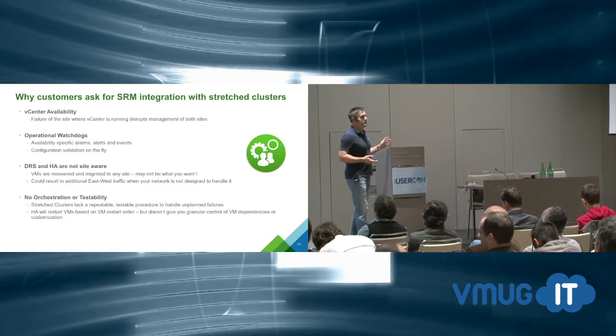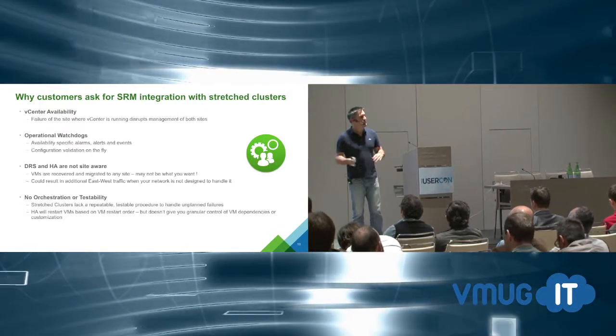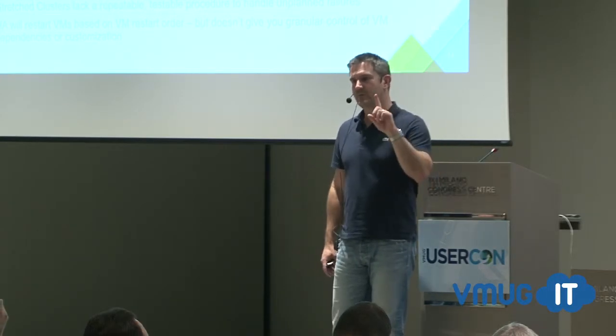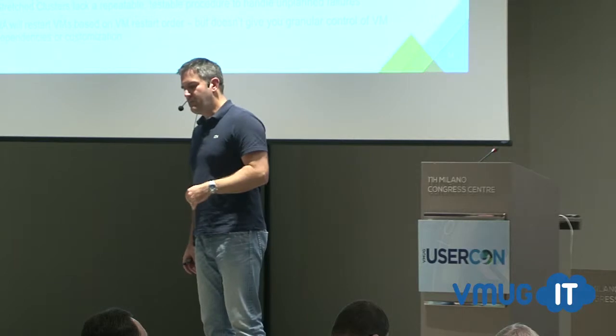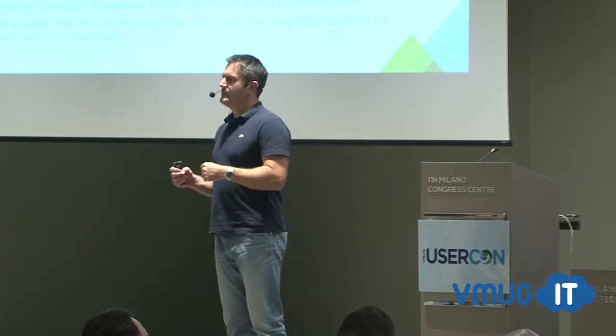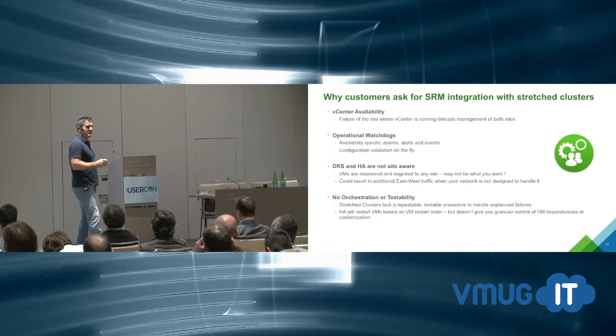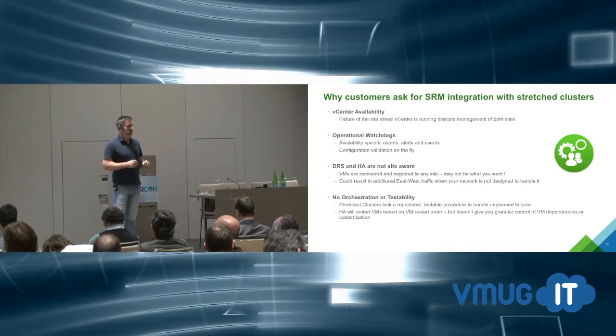Customers with stretch storage solutions found a lot of operational tools missing from Virtual Center — those tools live inside SRM. For example, Virtual Center availability: people with stretch clusters worried about how to protect Virtual Center when there's only one. With the two-VC design it doesn't matter. Another concern was operational watchdogs — for example, with VPLEX if you don't stretch every device, what stops someone accidentally adding a VMDK from a non-stretched datastore to a VM that was otherwise fully protected?